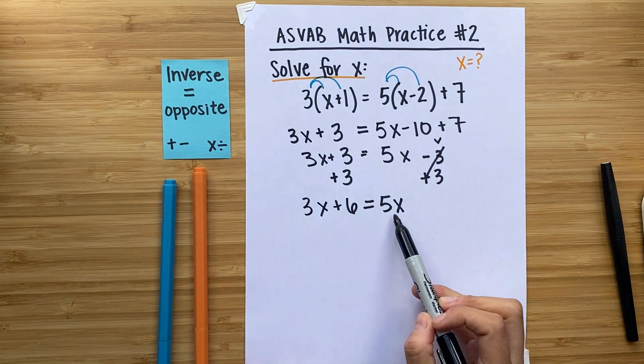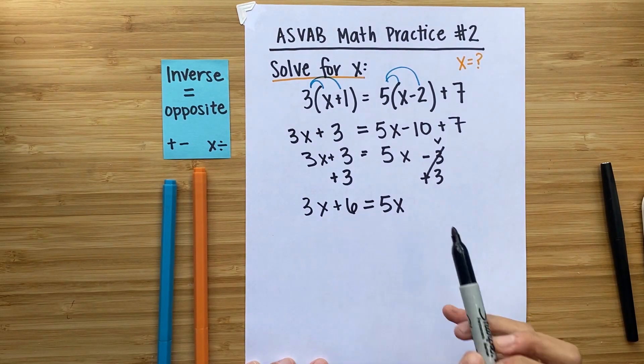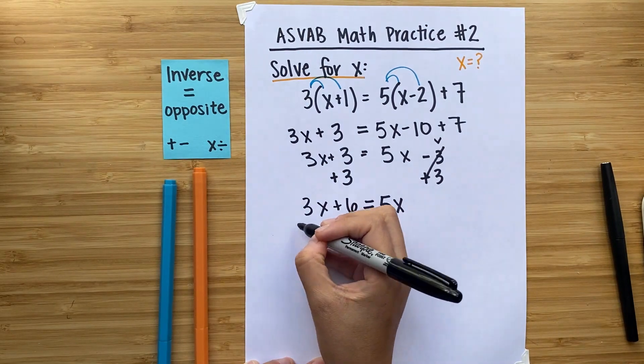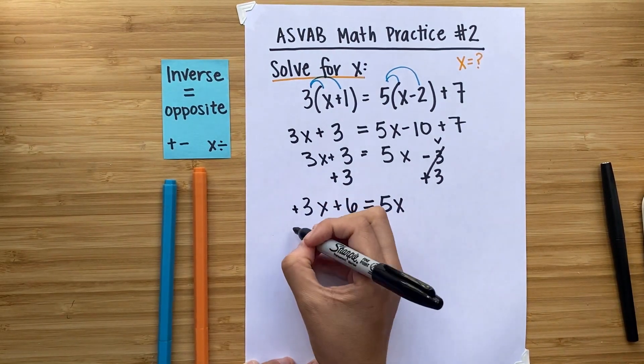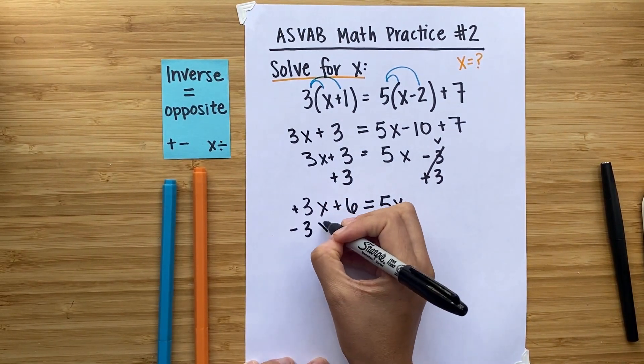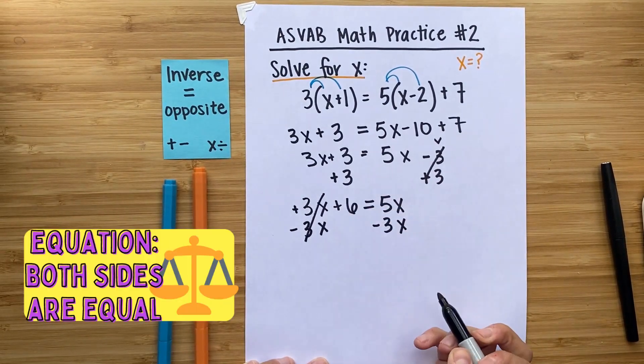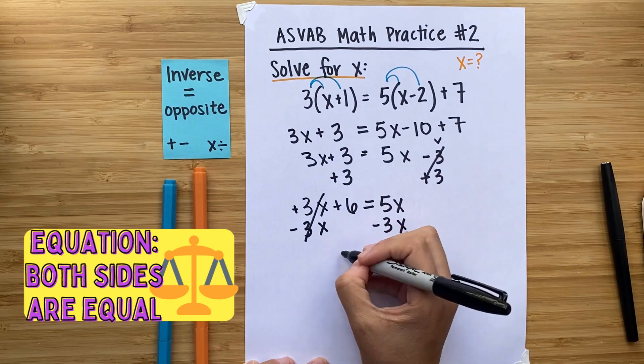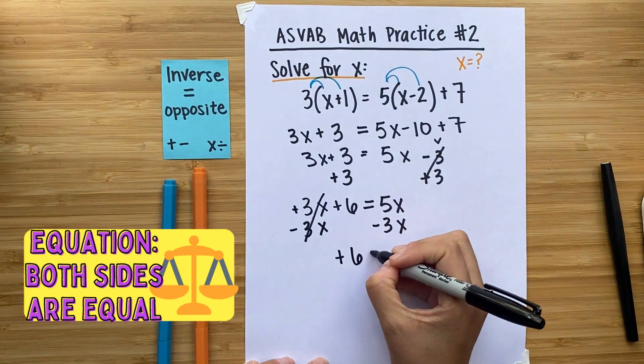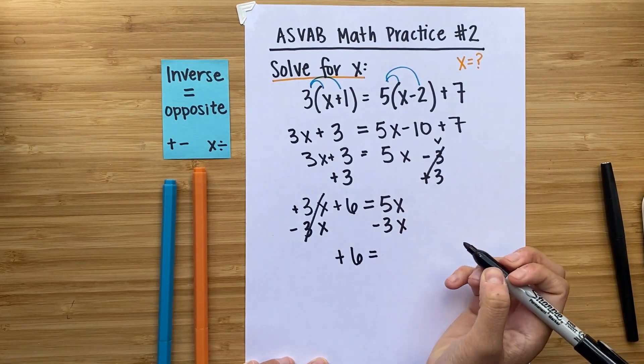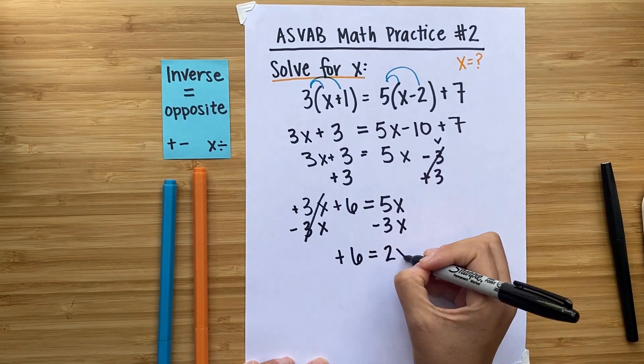Here, x is all by itself. So I'm going to get the 3x over to this side. The opposite of adding 3x is subtracting 3x. I'll do it to both sides because equations are a balance. What you do to one side, you have to do to the other, which leaves me with plus 6 is equal to 2x.